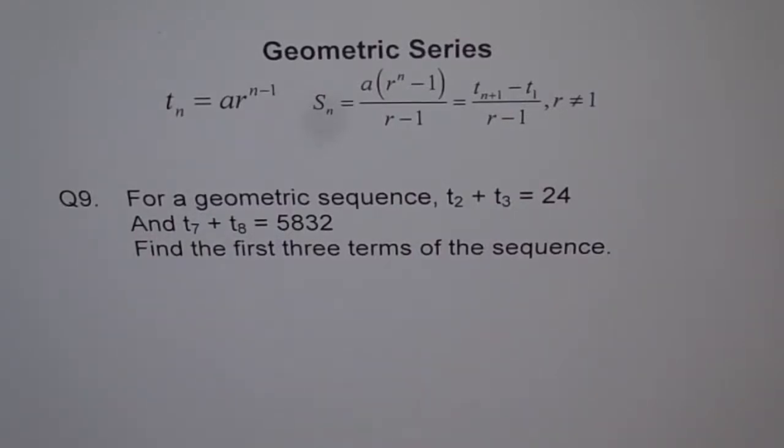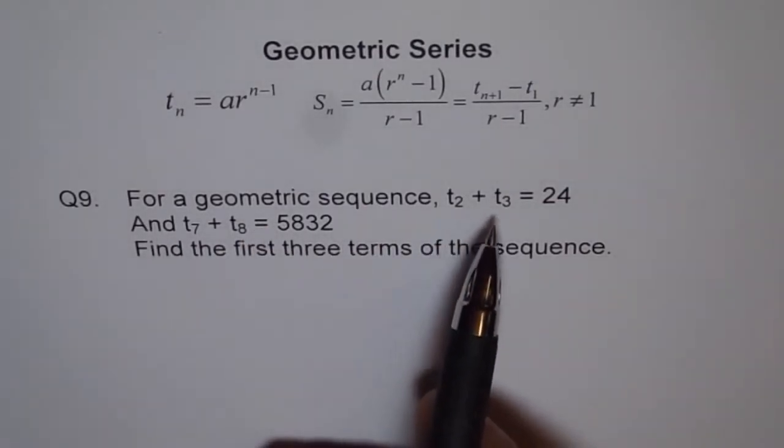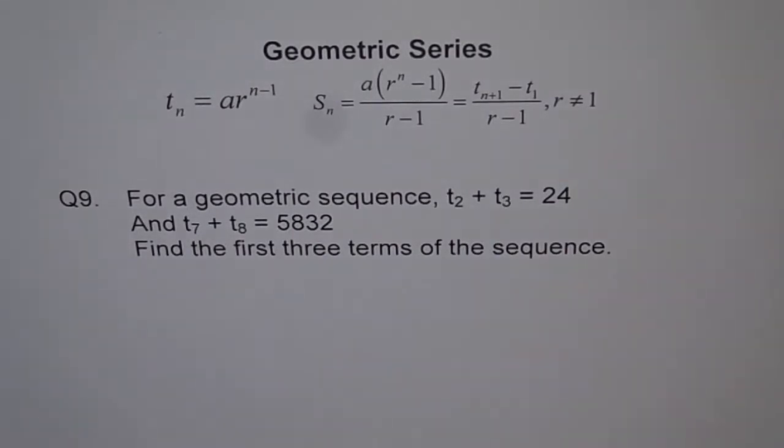Here is a very interesting problem on geometric sequence. Question 9: For a geometric sequence t2 plus t3 equals 24 and t7 plus t8 equals 5832. Find the first three terms of the sequence.